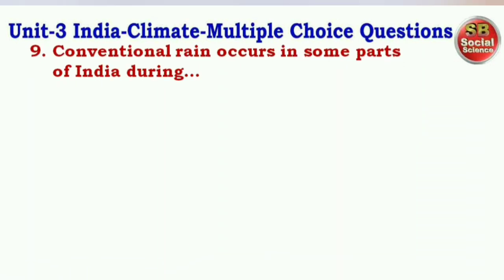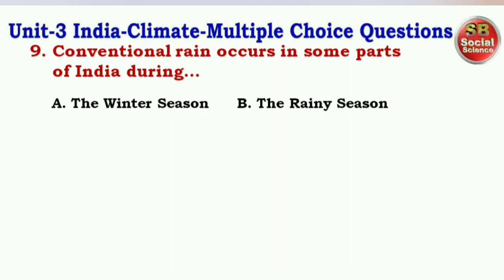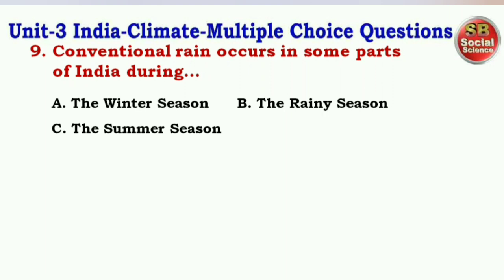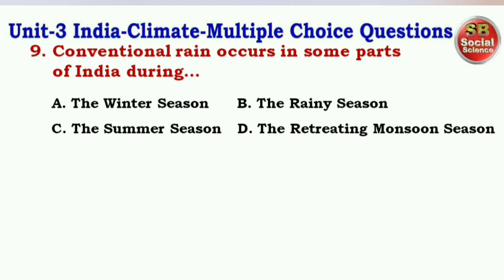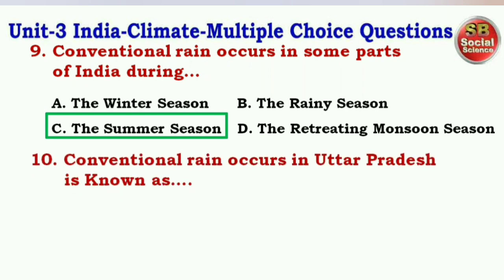Next question: The highest recorded temperature in India — options are Mawsynram, Ruili, Drass, Ganganagar. The right answer is option D — Ganganagar. Next question: Conventional rain occurs in some parts of India during — options are the winter season, the rainy season, the summer season, the retreating monsoon season. The right answer is option C — the summer season.